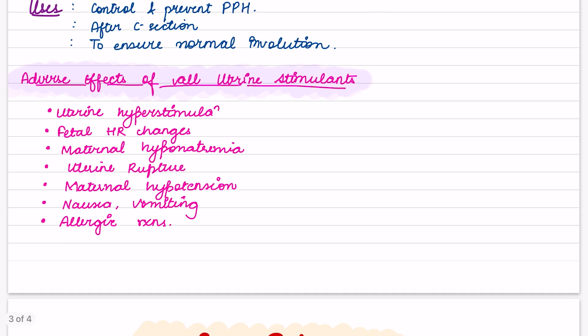What are the adverse effects of all uterine stimulants? Uterine hyperstimulation, fetal heart rate changes, maternal hyponatremia, uterine rupture, maternal hypotension, nausea, vomiting, and allergic reactions.